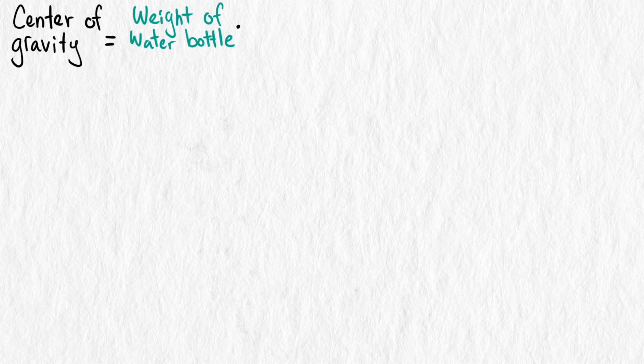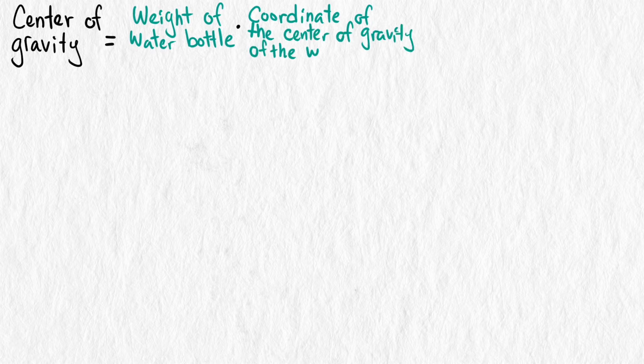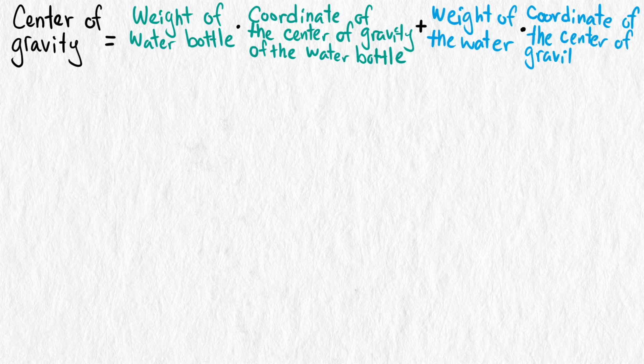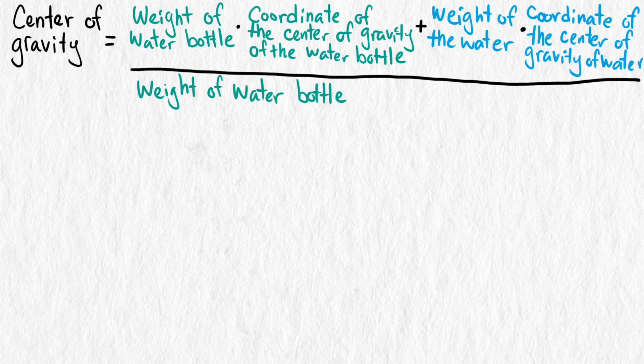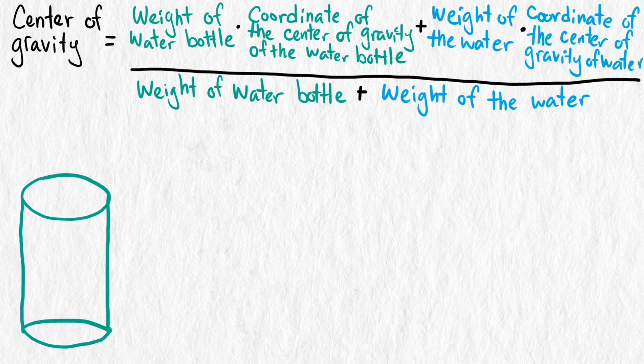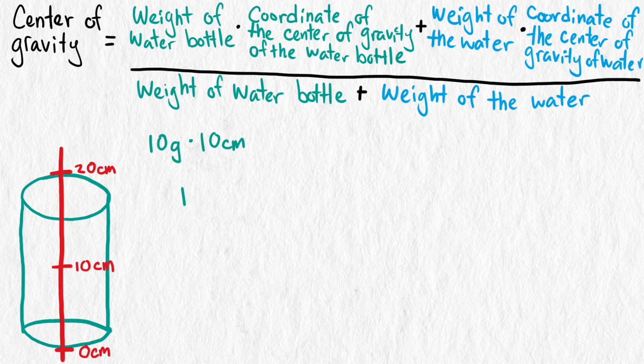The center of gravity is the weight of the water bottle times the coordinate of the center of gravity of the water bottle plus the weight of the water times the coordinate of the center of gravity of the water, all divided by the weight of the water bottle and the weight of the water. Now you know why mathematicians like to label quantities with one letter and not use whole phrases. The coordinate of the height of the center of gravity of the water bottle is halfway up the bottle, since it is symmetric about that point, so we can put in the weight and the coordinate for the water bottle.